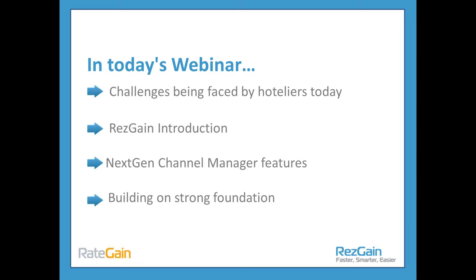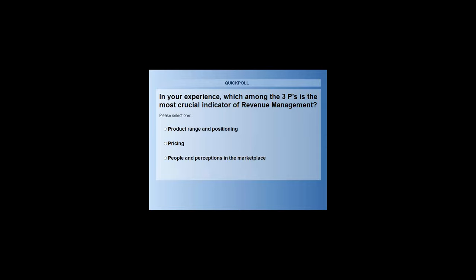Our first poll is to understand from you, the audience, what among the three P's we identify is the most crucial indicator of revenue management. Is it product range and positioning? Is it pricing — is price the sole thing? Or is it people and perceptions in the marketplace — is it people's perceptions of you that are impacting the most on revenue management?